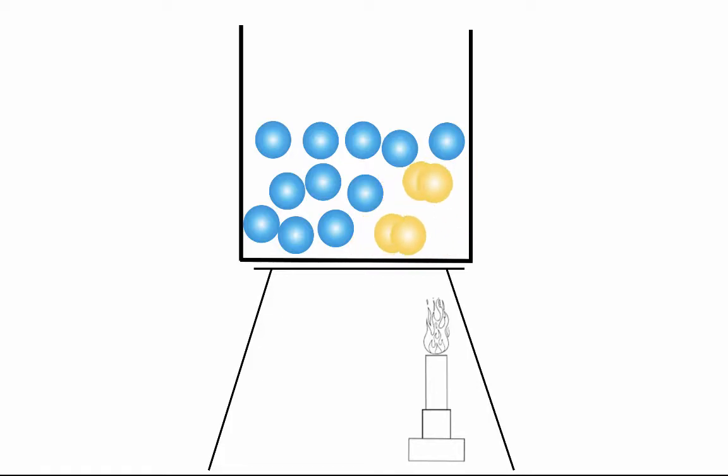As the particles vibrate more, they actually move further apart from one another because they're moving around so much. This leads to that part of the liquid becoming less dense, and the less dense particles rise.